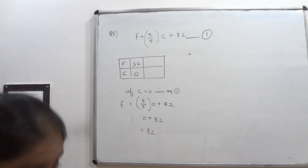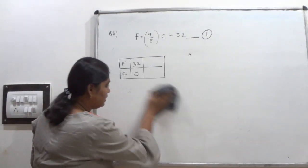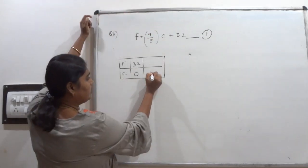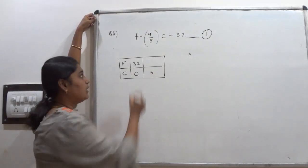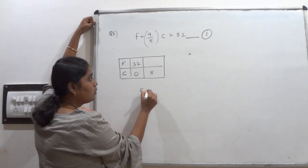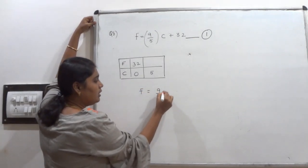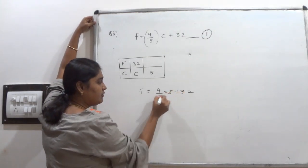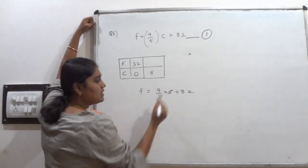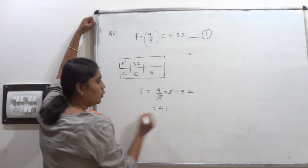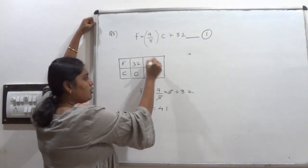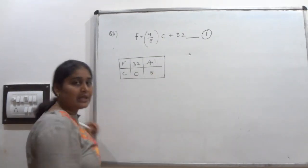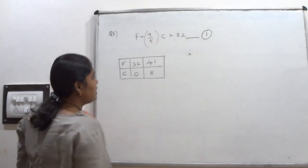For the second point, I am keeping C equal to 5. F equals 9 by 5 into 5 plus 32. The 5 and 5 cancel, giving 9 plus 32, which is 41. So F is 41. I now have 2 coordinate points to draw the graph of this linear equation.